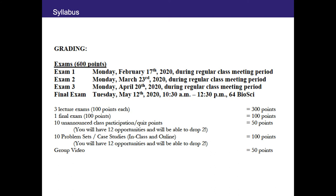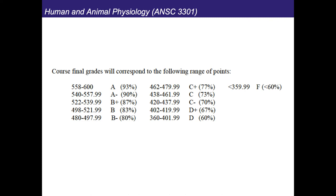This semester an A is 93% or above, and an A-minus is 90 to 93. Hardly anybody ever gets a D or fails this class, and really not a lot of people get Cs either — most people get As and Bs. If you just come to class and participate, that's really half the battle with all those buffer points. The full grading ranges are listed on your syllabus.